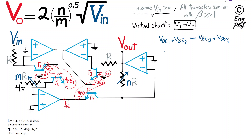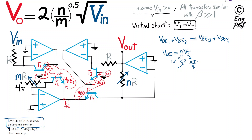Now I'm going to substitute these base-emitter voltages using the well-known BJT equation for VBE as a function of current. We know that VBE = η·VT·ln(IC/IS), where η is the ideality factor — a number between 1 and 2 for BJTs, closer to 2 — and VT is the thermal voltage, equal to kT/Q, where k is Boltzmann's constant, T is the junction temperature in Kelvin, and Q is the electron charge.